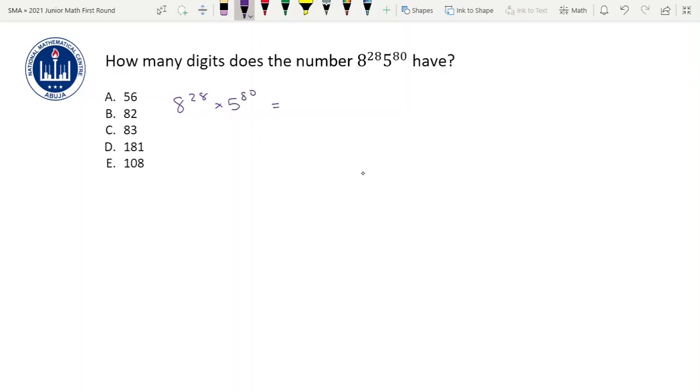And we're going to write this as, since 8 is 2 raised to power 3, we'll write this as 2 raised to power 3 raised to power 28 times 5 raised to power 80.